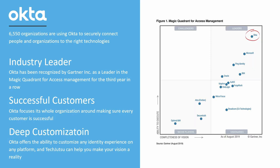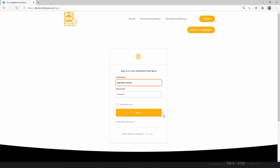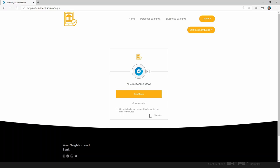It was important for us at TechJutsu to partner with the best vendors. Our identity partner is Okta — a leader in the Gartner quadrant, recognized for successful large customer identity deployments and very deep customization available through the Okta widgets and APIs. Now I'll show you the live demo. I'm going to play the role of a normal neighborhood bank customer. As you can see, our bank is providing login through Okta — this is the Okta login widget being used here.